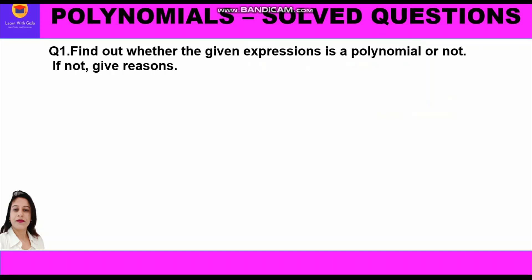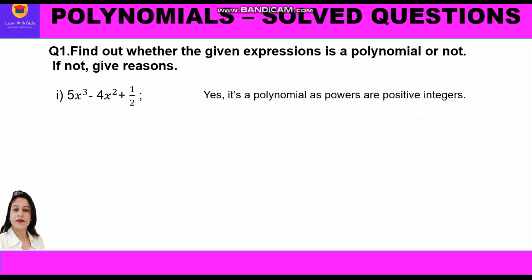Question 1: Find out whether the given expressions are polynomials or not; if not, give reasons. Part 1: 5x³ − 4x² + ½. Yes, it is a polynomial, as the powers of x are positive integers — x has powers 3 and 2, and they are positive.